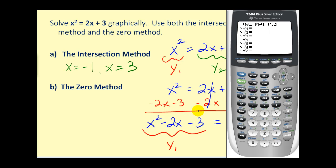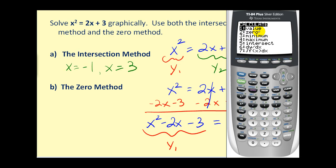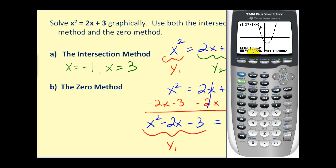Type x squared minus two x minus three into y one and press graph. We can visually see an x-intercept at negative one and another at positive three. To calculate them, press second, trace, option two. For the left intercept, move the cursor to the left bound — above the intercept — press enter, then move to the right bound below, press enter twice. The result shows x equals negative one.